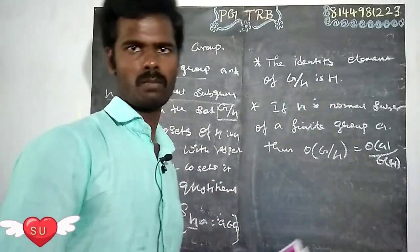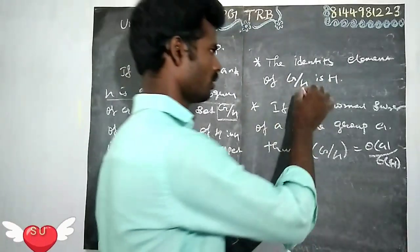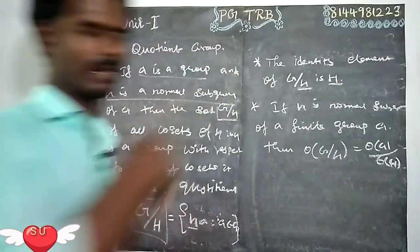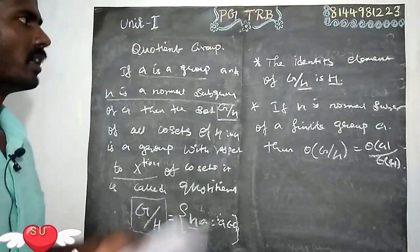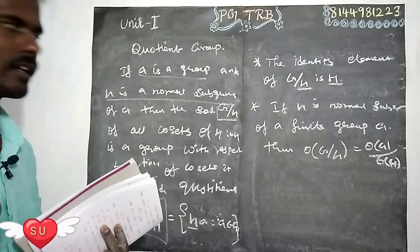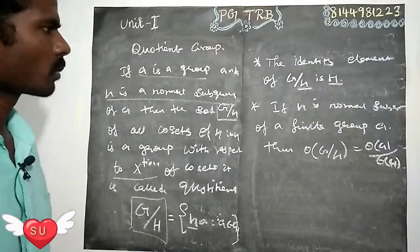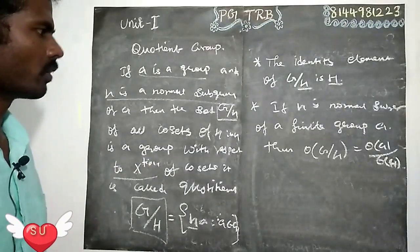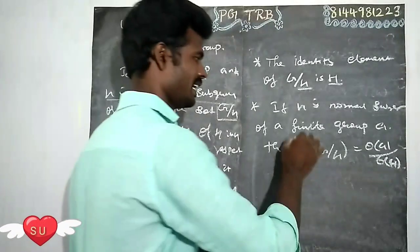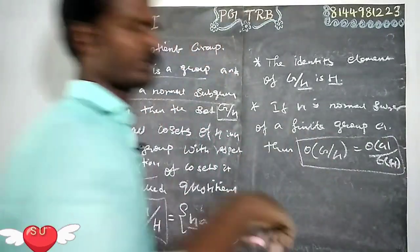H is a normal subgroup, G is a group. The identity element — where we will find the identity element. H is a normal subgroup of the finite group; the order of G divided by H equals the order of G divided by the order of H.